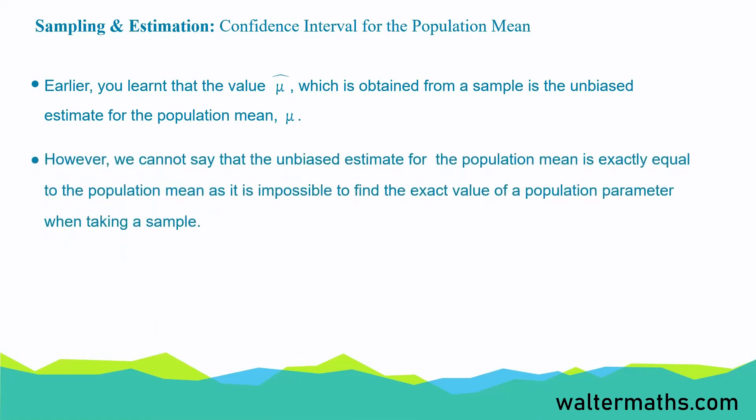However, we cannot really say that the unbiased estimate for the population mean is exactly equal to the population mean, as it is impossible to find the exact value of a population parameter when taking a sample. So, instead, we can form a confidence interval for the population mean mu.